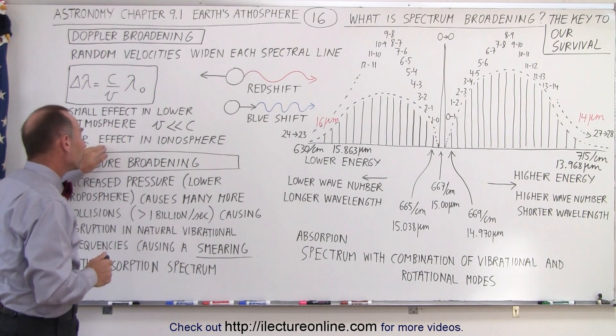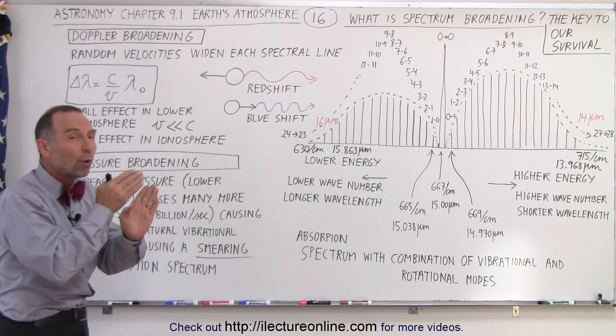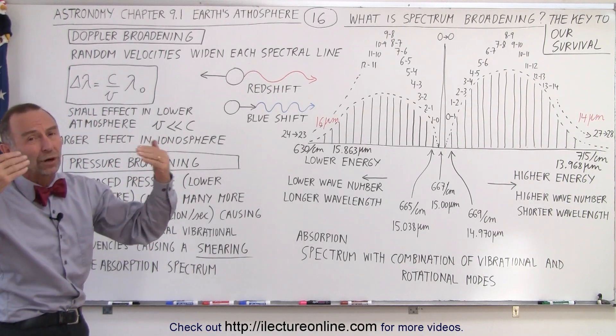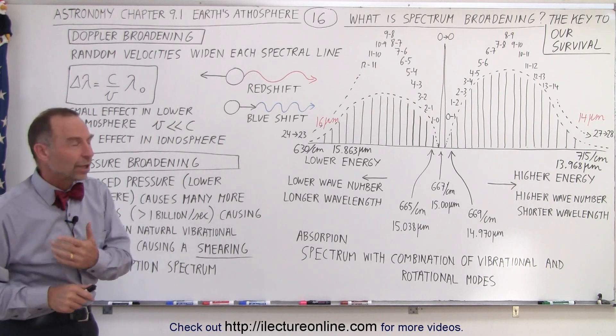In the upper atmosphere, in the ionosphere, where the molecules move at very high speeds, there's more of an effect there, but that's not where it's going to help us keep warm. So finally, there's one more thing that happens.